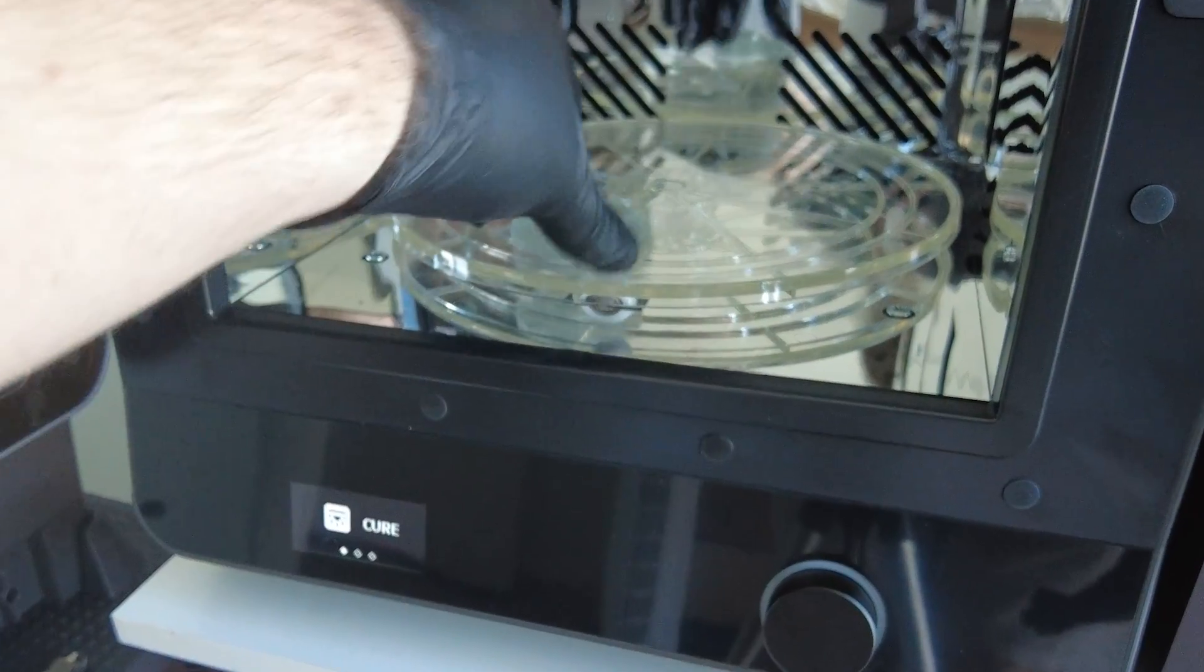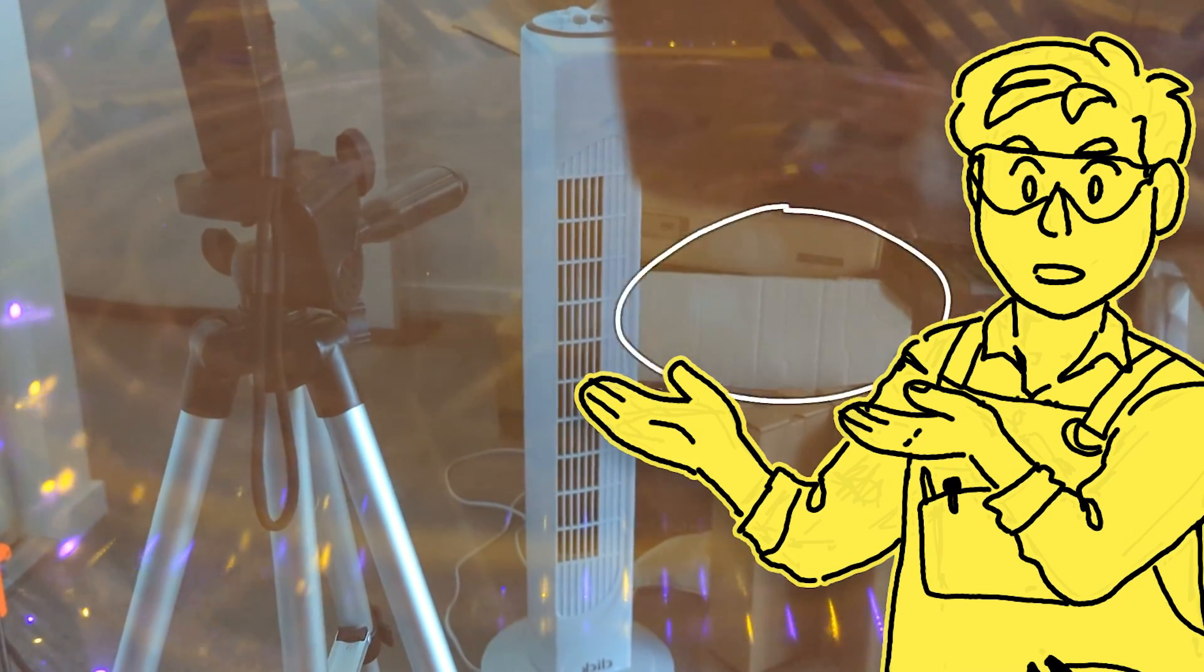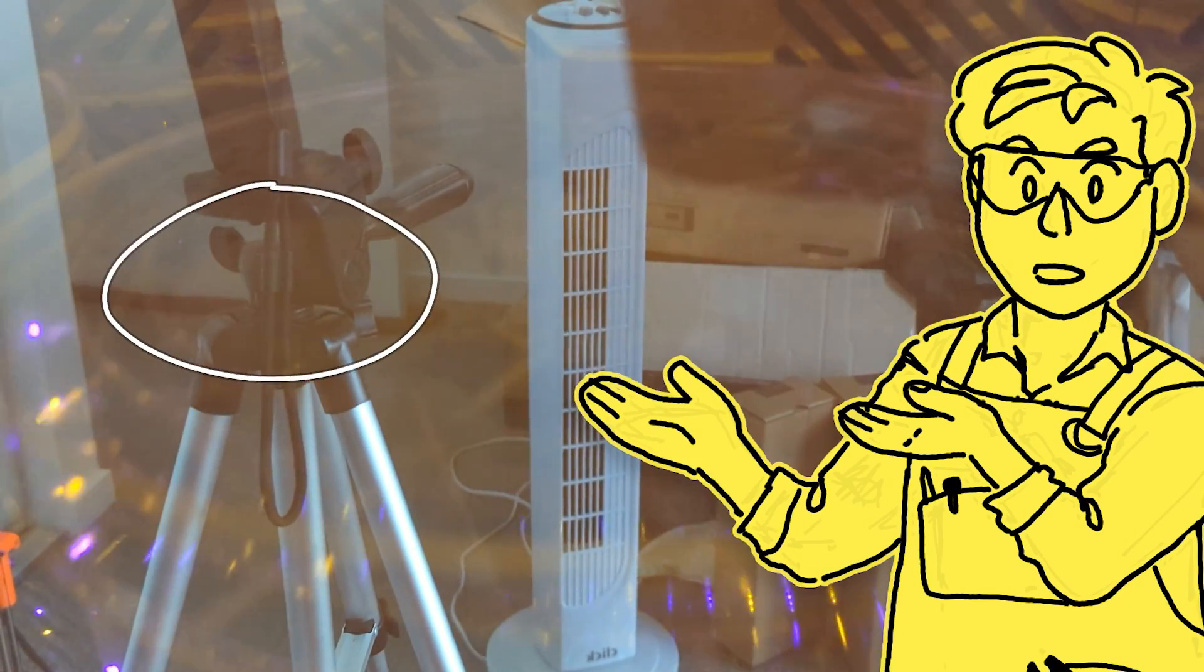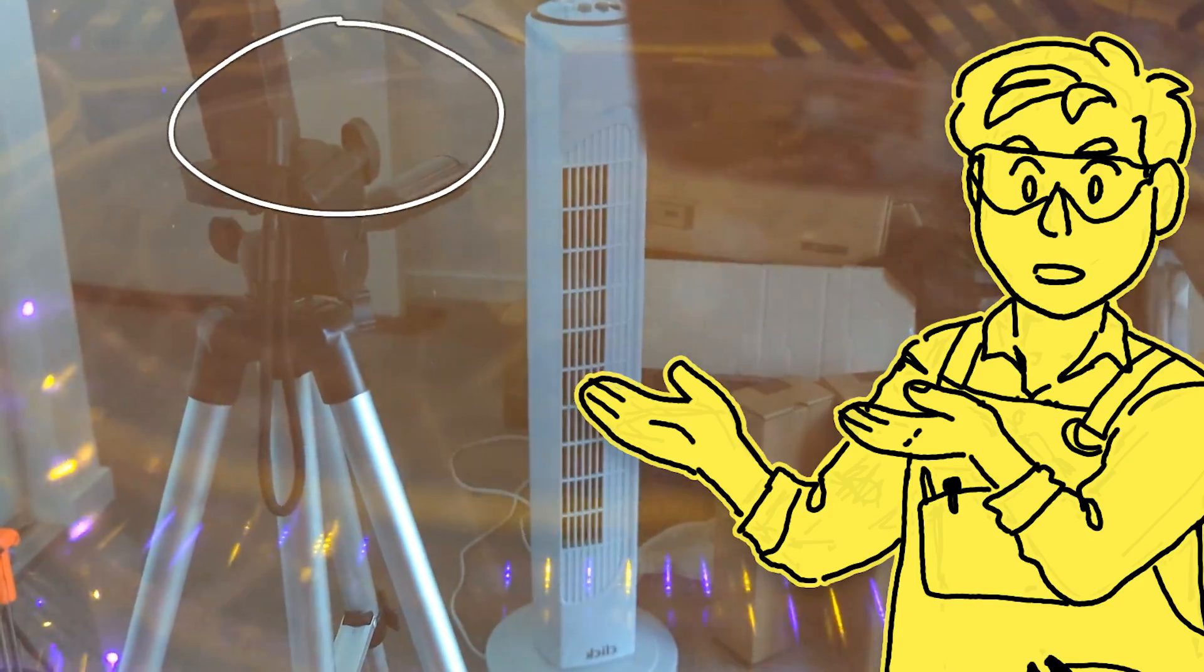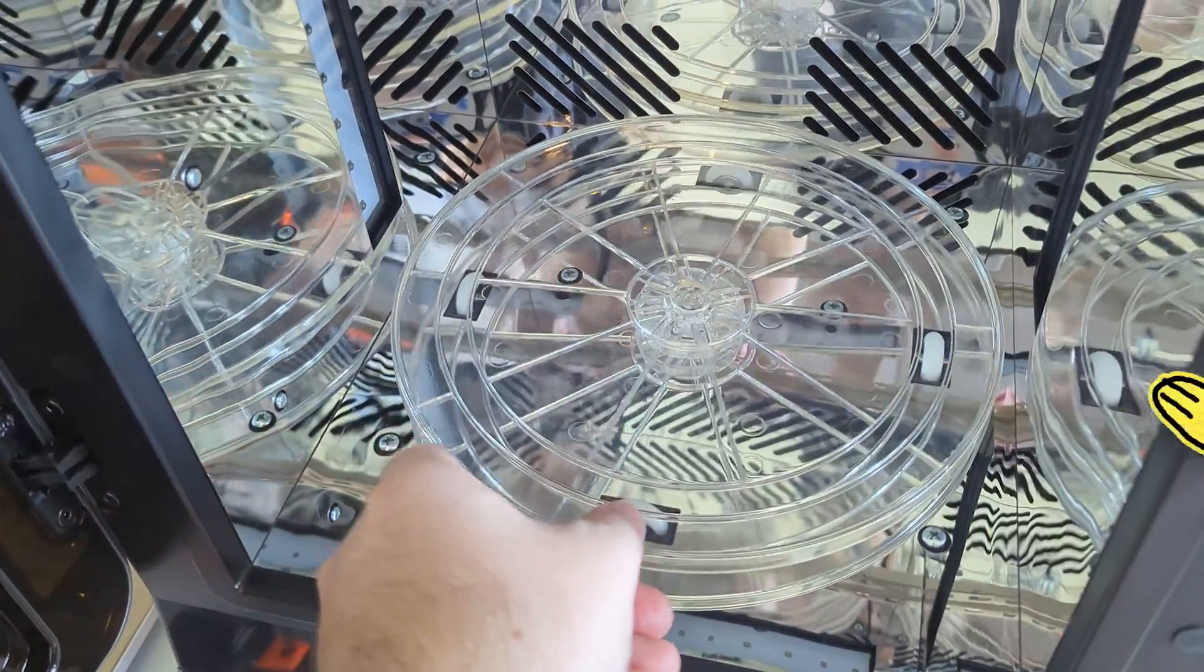After the print is dried, we can throw it into the cure station. Mine cured for half an hour, 15 minutes each side. We do this because when a resin print finishes, the print is still a tiny bit soft, and that's why it needs to be hardened under UV light that the curing station emits. The reflective coating and the spinning plate helps to get an even coverage all around the print.